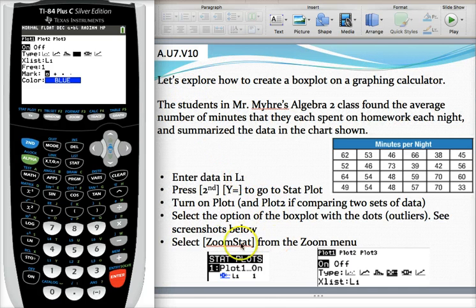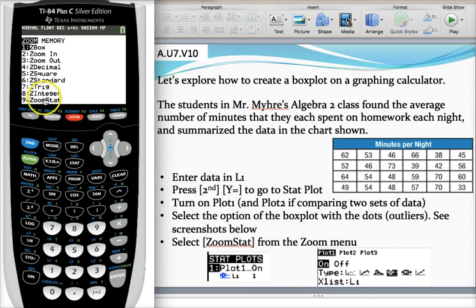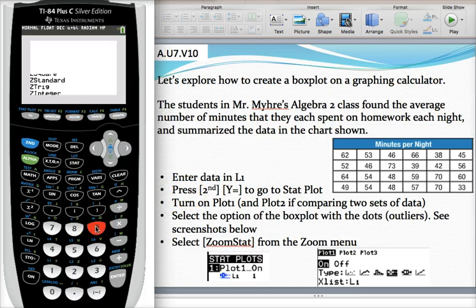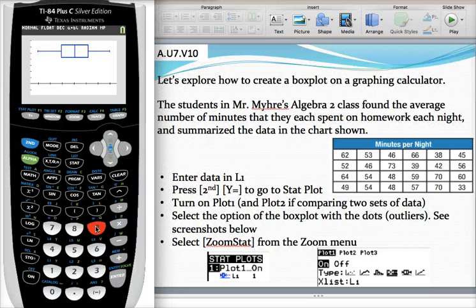The easiest way to set up your window is to use the zoom stat feature. So let's select zoom. And then option nine is zoom stat. So either go down there and press enter or just press nine to do it. And what this will do is set up your window so it's nice and conveniently set up for you. So there's a lovely looking box and whisker plot.